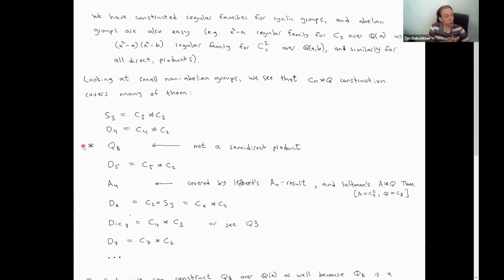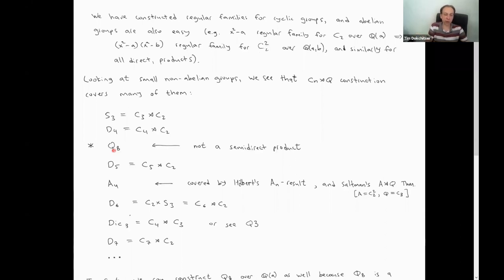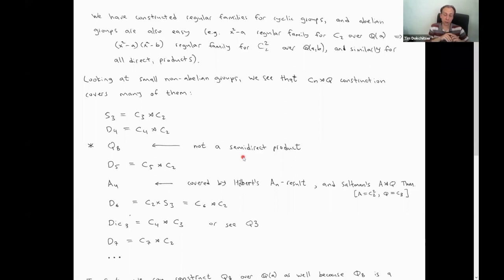It turns out Q8 is not a semi-direct product of anything by anything. It's quite easy to see because this group has a subgroup {±1}. The elements in Q8 are ±1, ±i, ±j, ±k. And {±1} has the property that it's a subgroup contained in every other subgroup of Q8. All the other subgroups generated by i, j, and k will contain it. Such a group can never be a semi-direct product, because for a semi-direct product you need two subgroups — a copy of A and a copy of Q — one normal, one not, which have trivial intersection. And you can't do it; you can't have trivial intersection when every subgroup contains the same elements ±1.